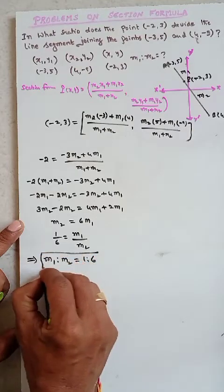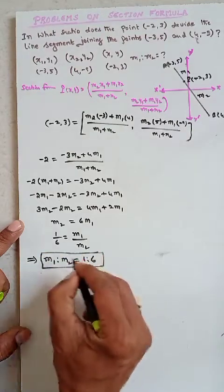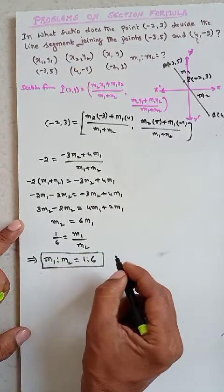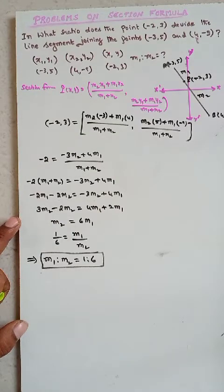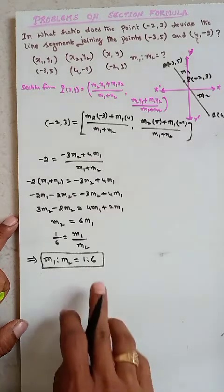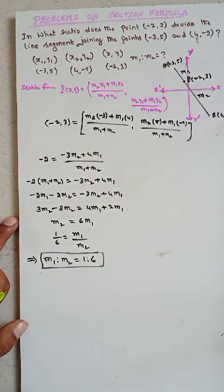Therefore, the point (−2, 3) divides the line segment joining (−3, 5) and (4, −9) in the ratio 1 : 6.